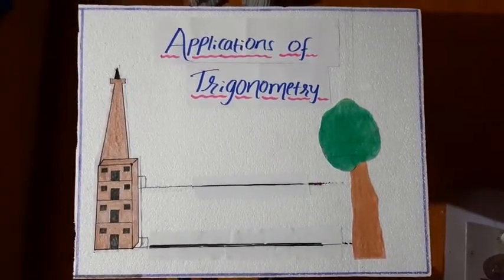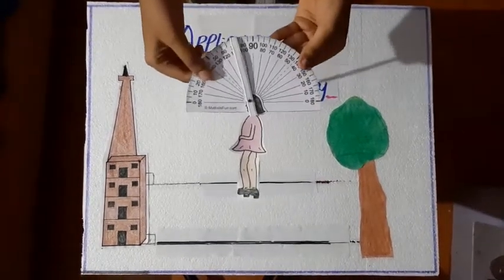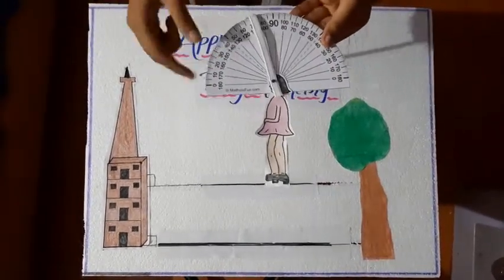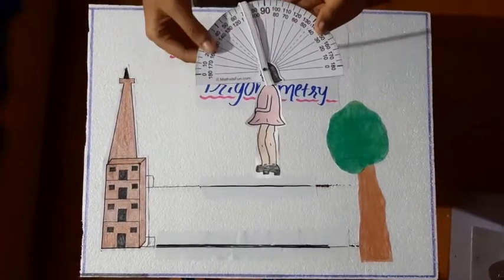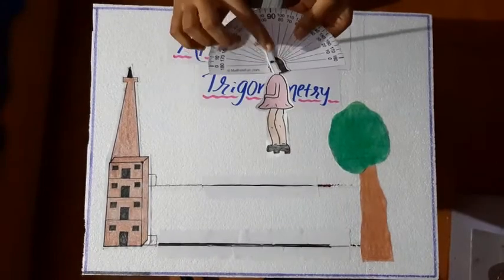Next comes the important part of this model. We have to take a protractor either in a printed way or we can take a real protractor. And making a hole in the middle,